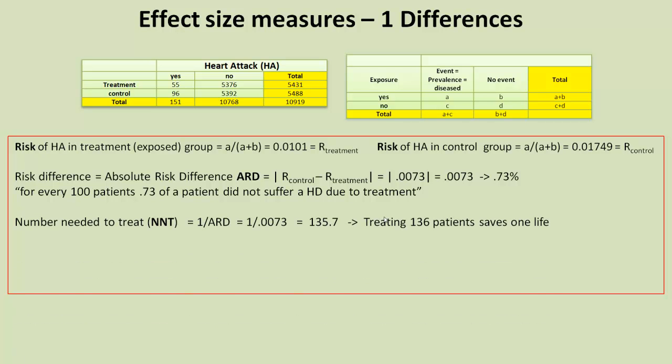Let's consider this next measure. This next measure, called the number needed to treat, NNT, uses that absolute risk difference and just takes its reciprocal. Basically, it takes a value over 1 and we get 135.7. And what that's saying is, taking approximately 136 patients saves one's life.